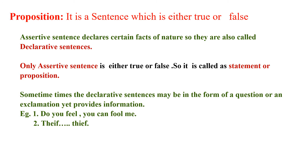For example: 'Do you feel you can fool me?' — this sentence conveys certain information, that you cannot fool me, so it is called a proposition. Similarly, 'Thief! Thief!' — this sentence also conveys that there is a thief, providing us with information. So it is also called a proposition.